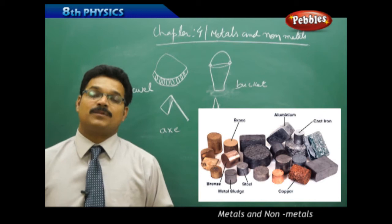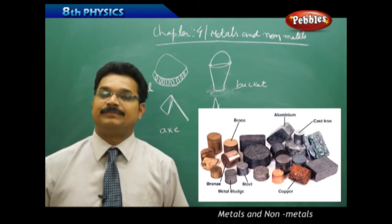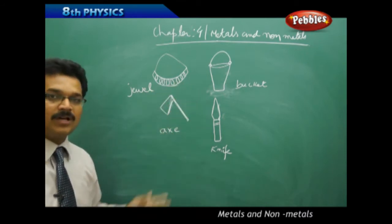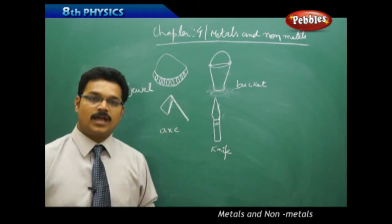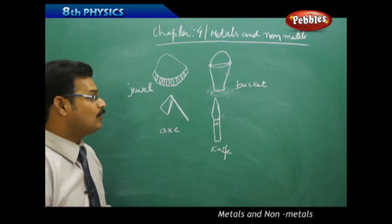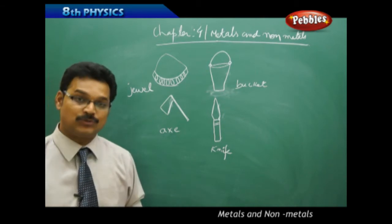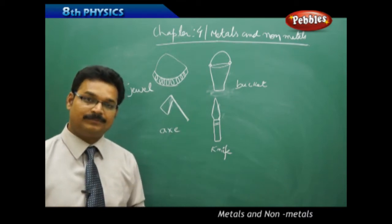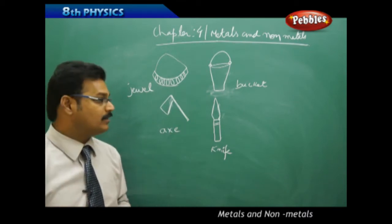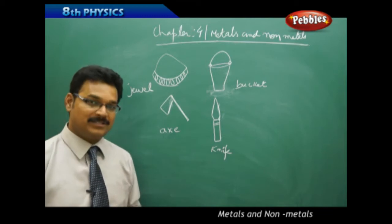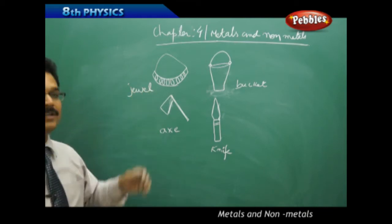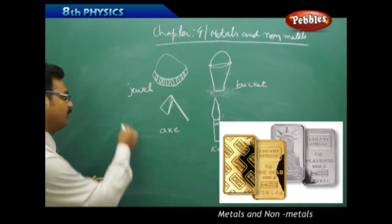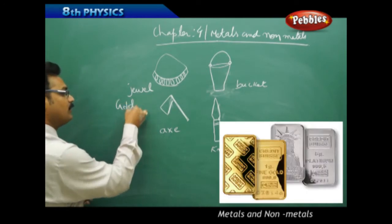If you observe these diagrams on the board and you're able to guess what type of materials are used to make these objects - yes, you are correct. In these objects, you can see some metals inside. For example, jewelry - what type of metal is used for jewelry? Yes, either gold or silver.